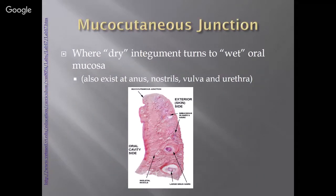The mucocutaneous junction is where the dry integument or skin turns to wet oral mucosa, and this exists at the anus, nostril, vulva, and urethra.